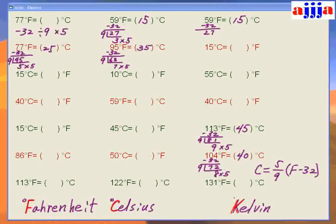Last time we talked about Fahrenheit to Celsius. Now we study Celsius to Fahrenheit. Remember, study one thing first until you're really good at that, then study the other one, otherwise you're going to get confused. Now, from your brain: minus 32, divided by 9, times 5 — this time it's exactly the opposite. We go backward: instead of times 5, divide by 5, then times 9, then plus 32.